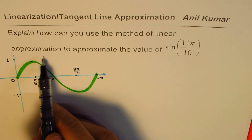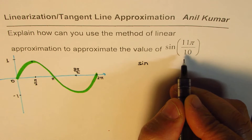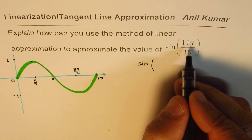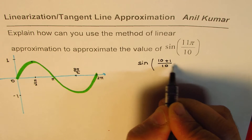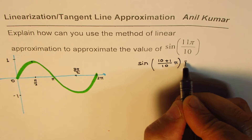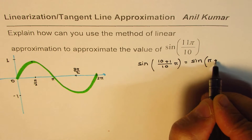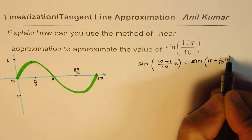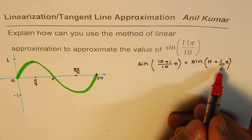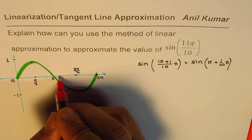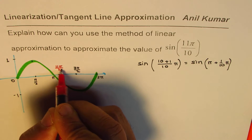Now we need to approximate the value of sine 11π/10. We can think of 11π/10 as π plus (1/10)π — since 11/10 equals (10+1)/10, this is sine of π + π/10. So the point we are interested in is very close to π, just 1/10th of π to the right. Let's assume this point is here on the graph.